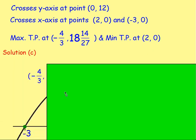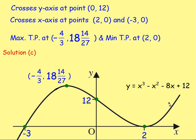And if you graph that, you will end up with something that looks like that. You can see it's crossing the y axis at 0, 12. You can see it's crossing the x axis at the point 2, 0 and negative 3, 0. There is a maximum turning point at negative 4 thirds, 18 and 14 27ths. And there is a minimum turning point at 2, 0. So you know the slope of the graph and what it looks like. And that is your answer.